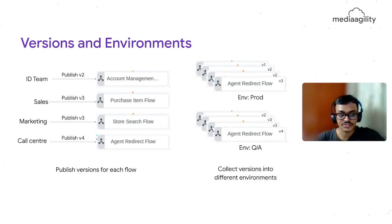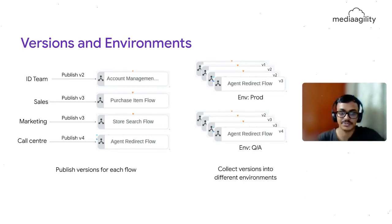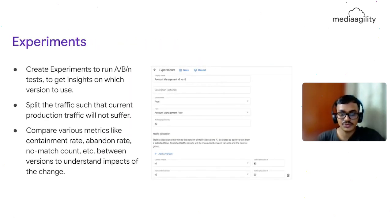There are also software engineering features like versions and environments. You can create multiple versions of flows independently — for example, the account management flow can be published by the identity team, and the sales team can publish a newer version of the purchase item flow. All these versions can be grouped into environments such as prod and QA. After everything is tested in QA, it can be pushed to production. Experiments provide a way to do A/B testing — you don't directly push a new version to prod.